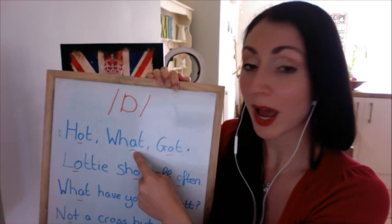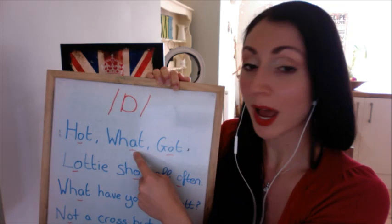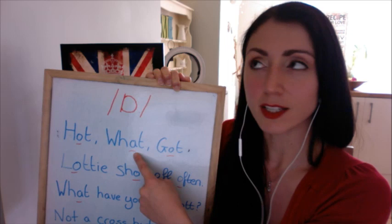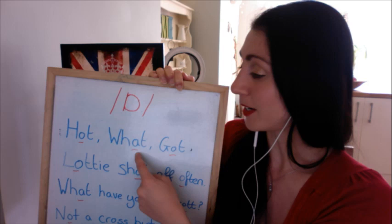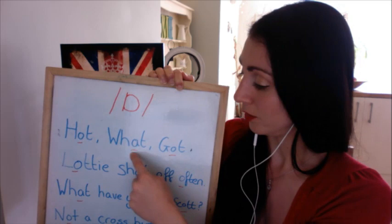We also have this sound in the word 'what'. This is a funny one because sometimes I hear people saying 'what' with an A sound, but it's not. Even though it's got an A in the spelling, we have this O sound. So make sure you change that vowel into O: 'what', 'what', 'what'.